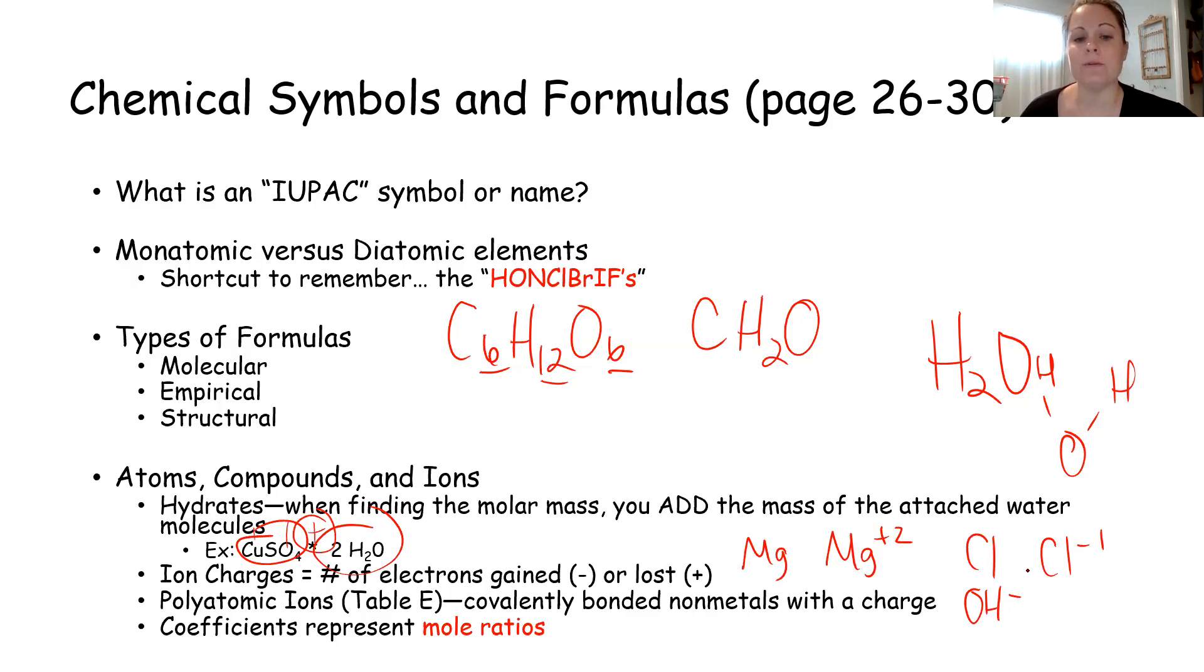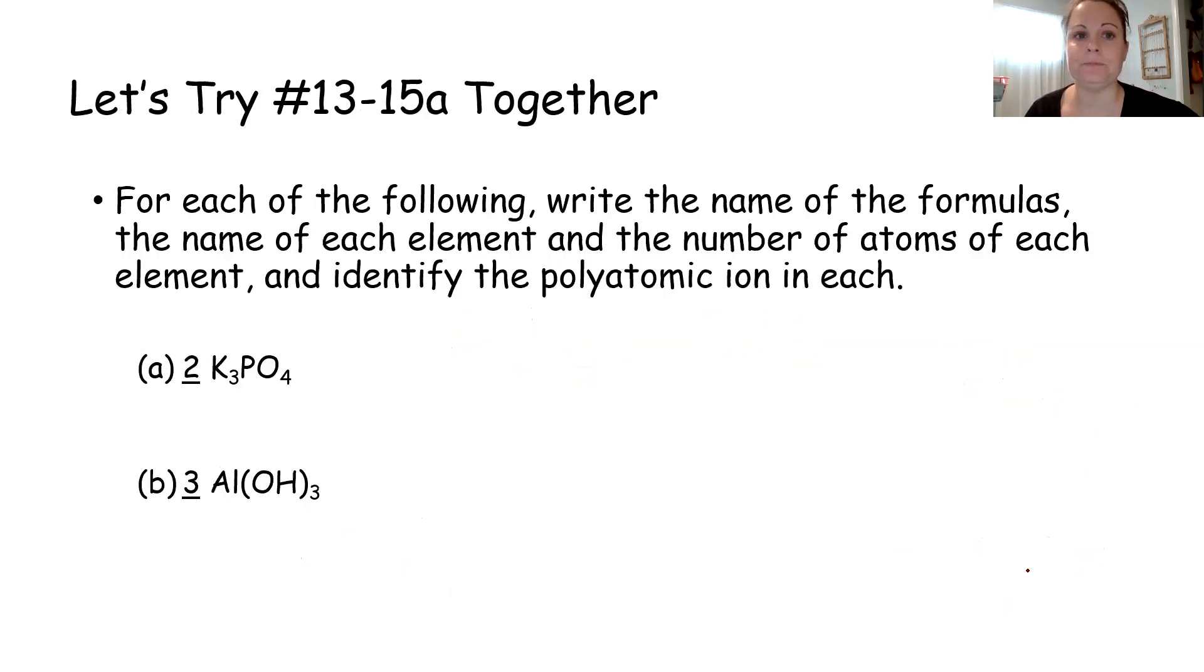So in this section, numbers 13, 14, and 15A, I wanted to go through this together. So basically just how to read the formula. For each of the following, number 13 has you write the name of the formula, each element, and the number of atoms of each. So in letter A, I underlined the two because that's technically number 14. In just this piece, I see three potassiums, one phosphorus, and four oxygen atoms. This is potassium phosphate. When I add the coefficient in front, as number 14 does, I multiply everything by two. So there are six potassiums, there are two phosphorus, and there are eight oxygen atoms in two potassium phosphates.